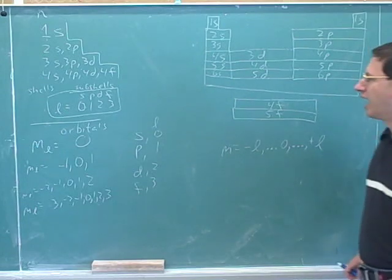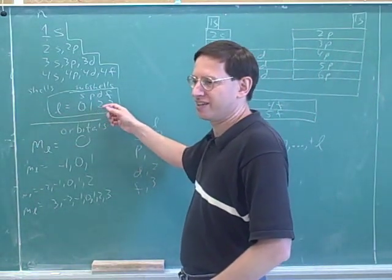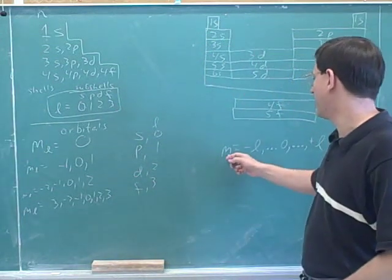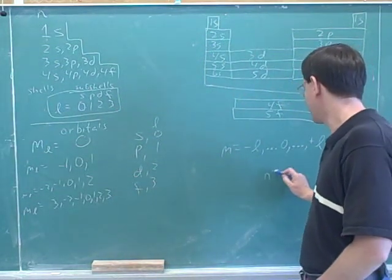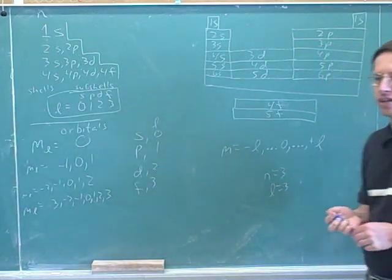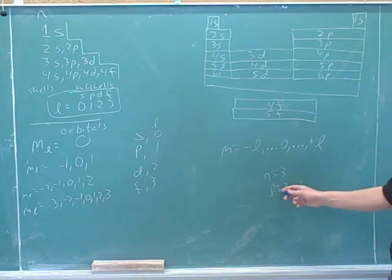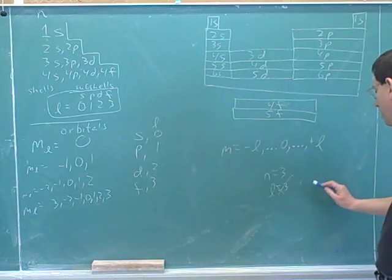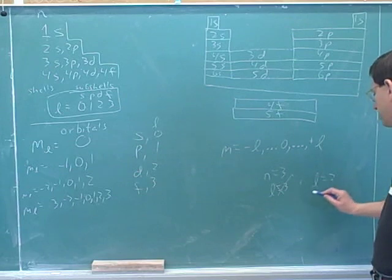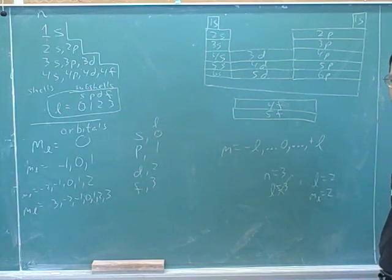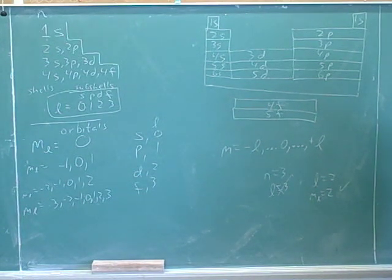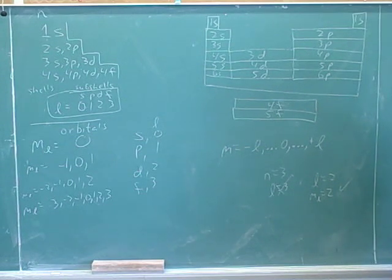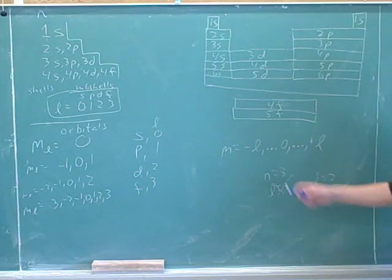One thing to watch out for: l can never equal n. Your l can't equal your n. But m sub l can equal l. So you can't have n equals three and l equals three — that's impossible because l only goes to n minus one. But could you have l equals two and m sub l equals two? Yes, that's totally fine. L goes from zero to n minus one, but m sub l goes from negative l to positive l, so m sub l equaling l is fine.